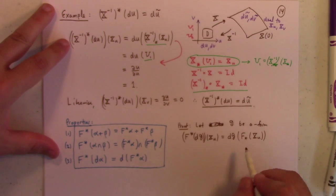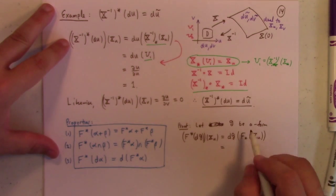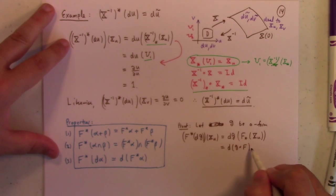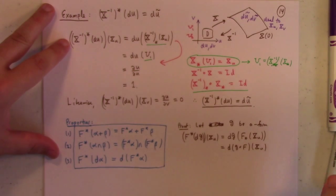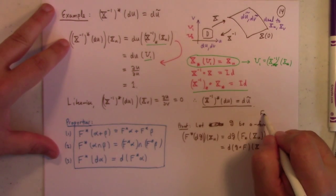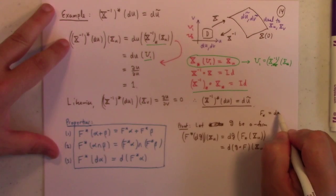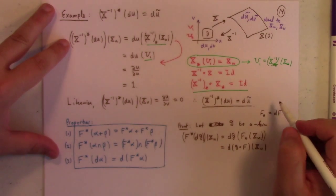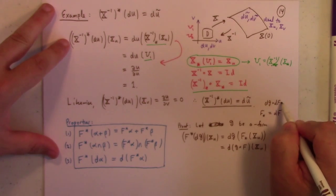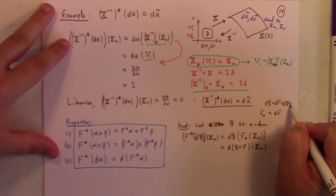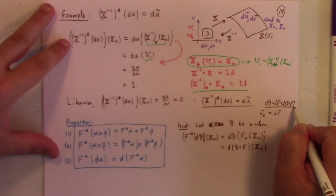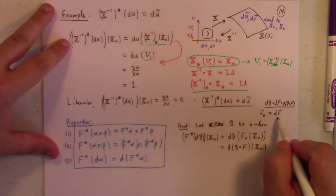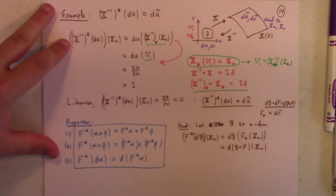But by the chain rule, that is d of G composed of F. I tell you, I like the way this looks even better if I use the notation F star is dF. Then you have dG of dF. And so you have this dG composed of dF is equal to d of G composed of F. That is in fact the chain rule for push forwards, which we could also call the differential.